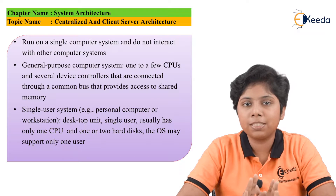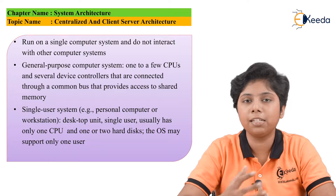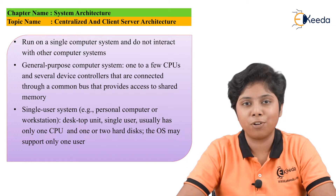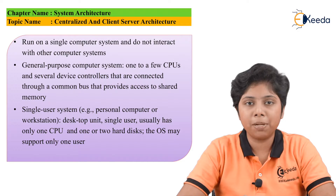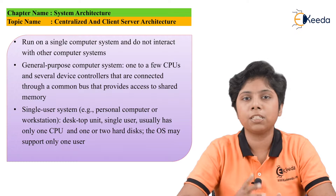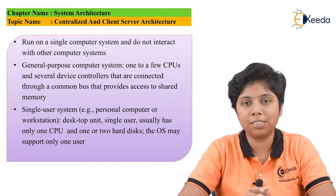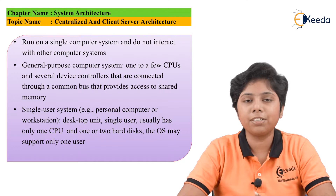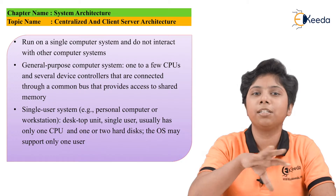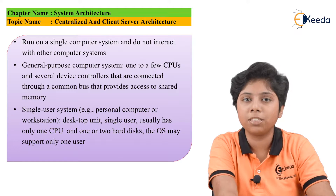The main difference between centralized and client-server is that one happens with many computers and the other uses a single computer system. The single computer system is the centralized one. A centralized system consists of one computer system that is not connected to any network and serves as its own client and own server, with the database stored inside that computer system only. The client-server system, in contrast, uses the centralized system as a server and other computer systems connect to it.